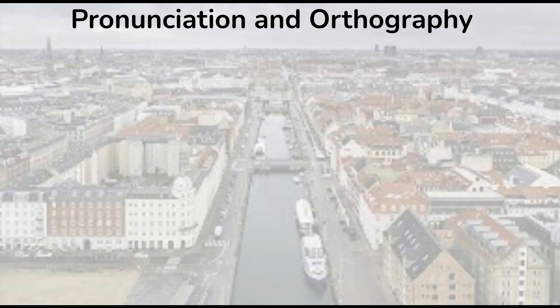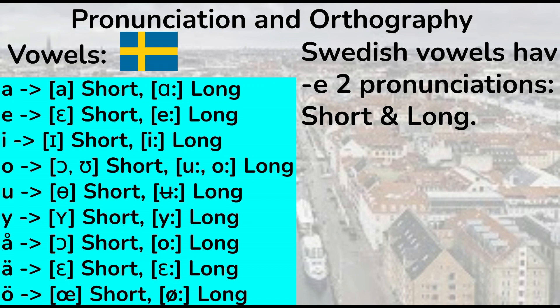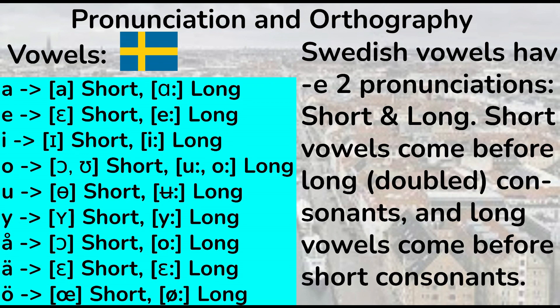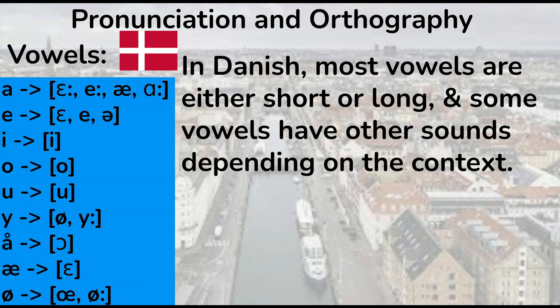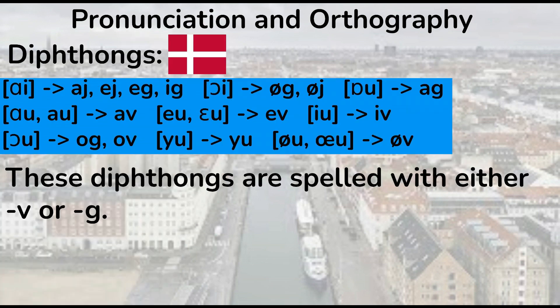Pronunciation and orthography. Swedish vowels have two different pronunciations: short and long. Short vowels come before long or doubled consonants, and long vowels come before short consonants. Swedish vowels also don't appear in diphthongs, but some southern dialects retain them, like the Skånian dialects. In Danish, most vowels are either short or long, and some vowels have other sounds depending on the context, mainly a and e. There are also many diphthongs that Swedish doesn't retain.